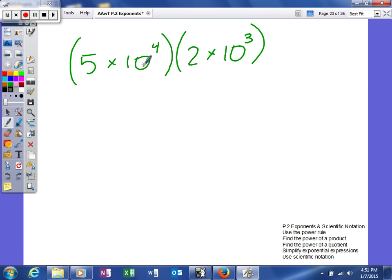We have like bases. Our base is 10 here and 10 here. So the base will stay the same. Anytime you multiply like bases you're going to add the exponents. These numbers right here we can call our coefficients and anytime you multiply you're going to multiply your coefficients together. So you get 10 times 10 to the seventh power.